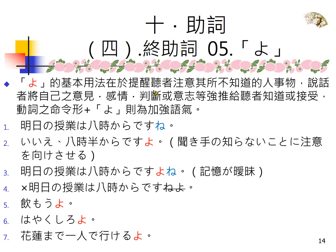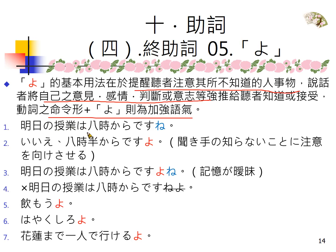最基本的用法：表示提醒听者注意，听者不知道，说话者知道，原则上是这样子。或者是将自己的意见、感情判断或意志让听者知道或接受。动词命令型加よ，有时候是加强语气，或者是缓和命令的语气。